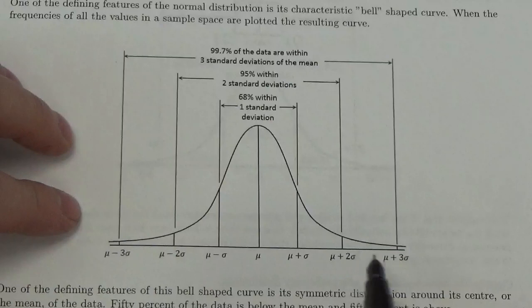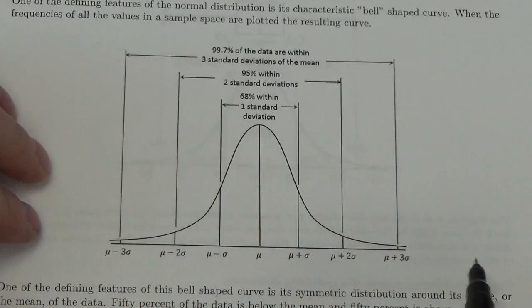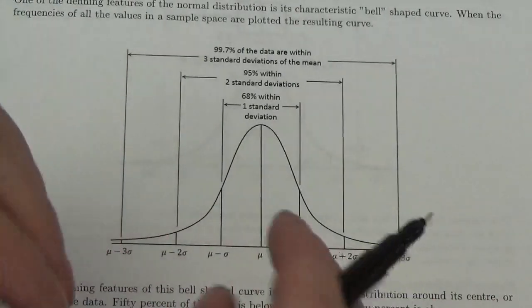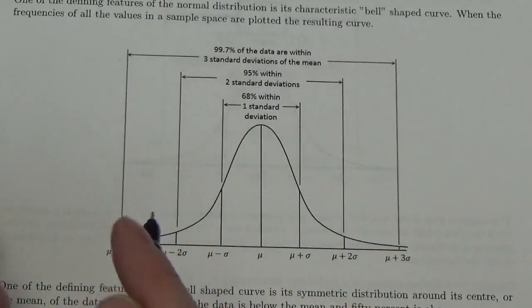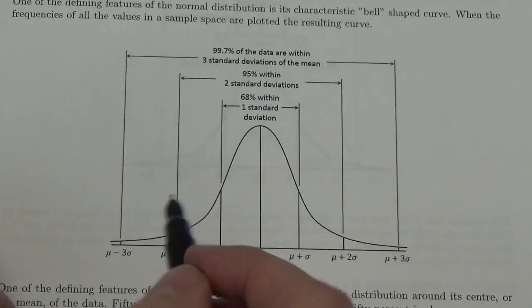Now, how steep this is can vary from population to population. That'll vary based on the size of the standard deviation, but that shape, that overall bell shape will stay.